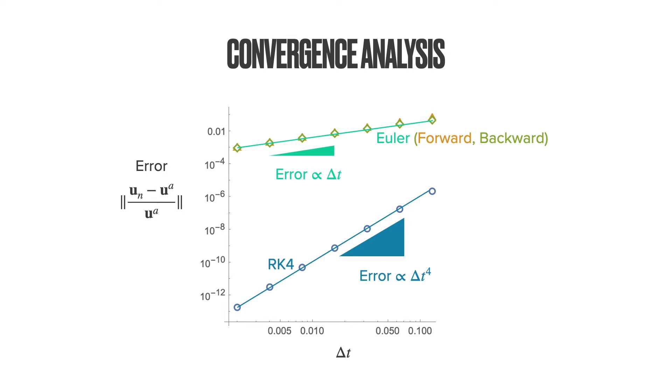If we reduce the time step size by half using the RK4 method, we should expect the error to reduce by at least 16 times, that is, delta T by 2 to the power of 4 is equal to error divided by 16.